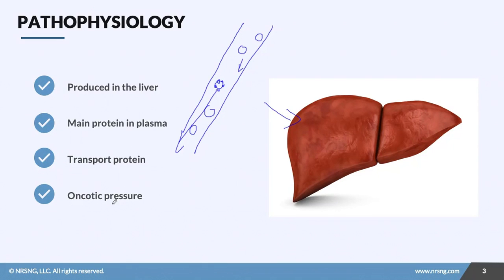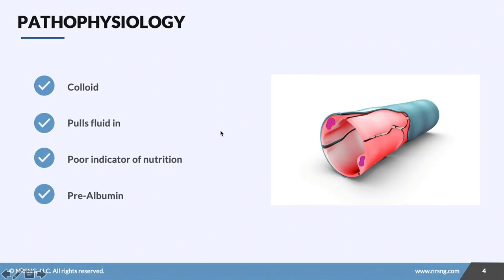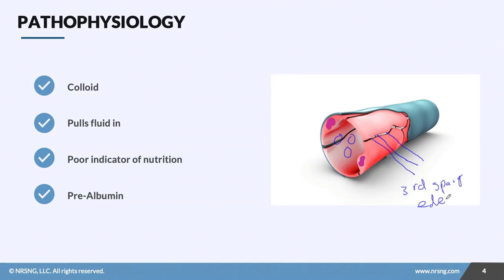Albumin also plays a huge role in oncotic pressure. Inside our vessels we have all this albumin, and oncotic pressure refers to the pressure that these proteins exert to pull fluids into the vessels. So if you've got all this third-spacing happening or all this edema happening, albumin inside the vessels can actually pull fluids inside to try to balance out how those fluids are distributed.